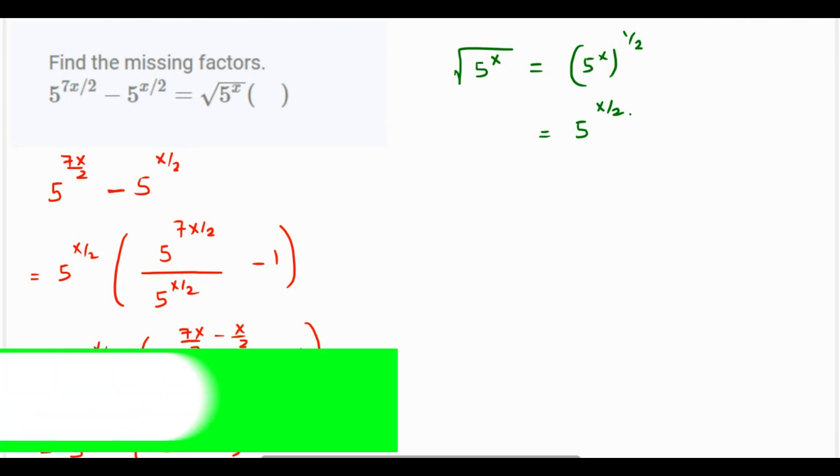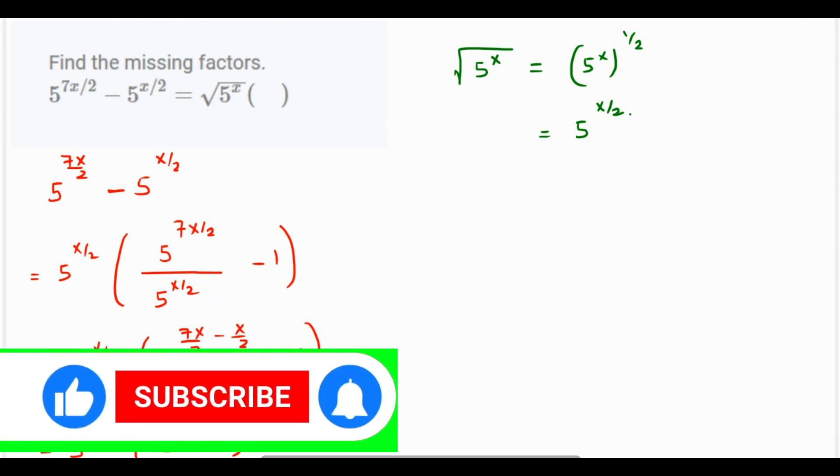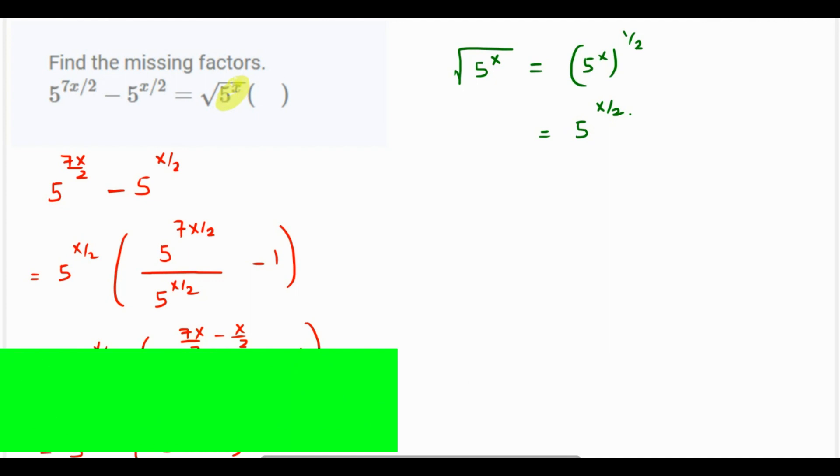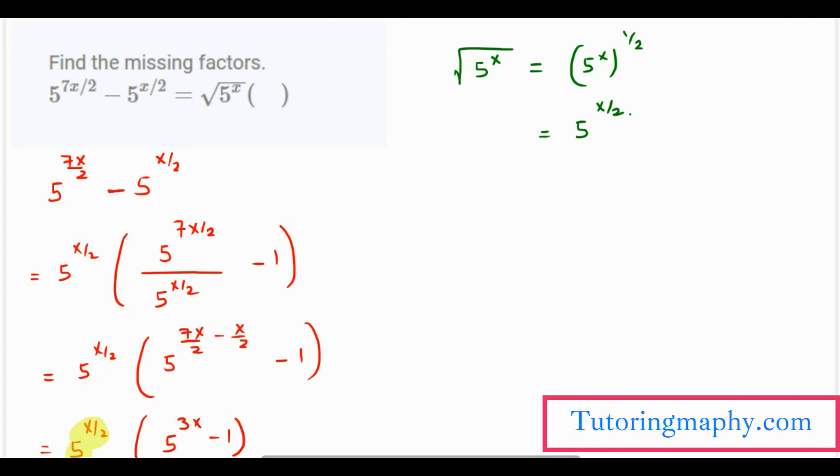We just said that root 5 raised to x is nothing but 5 raised to x over 2. So this is nothing but root of 5 raised to x because both are one and the same. If there is any confusion, I'm going to write it very clearly over here that these two are same.